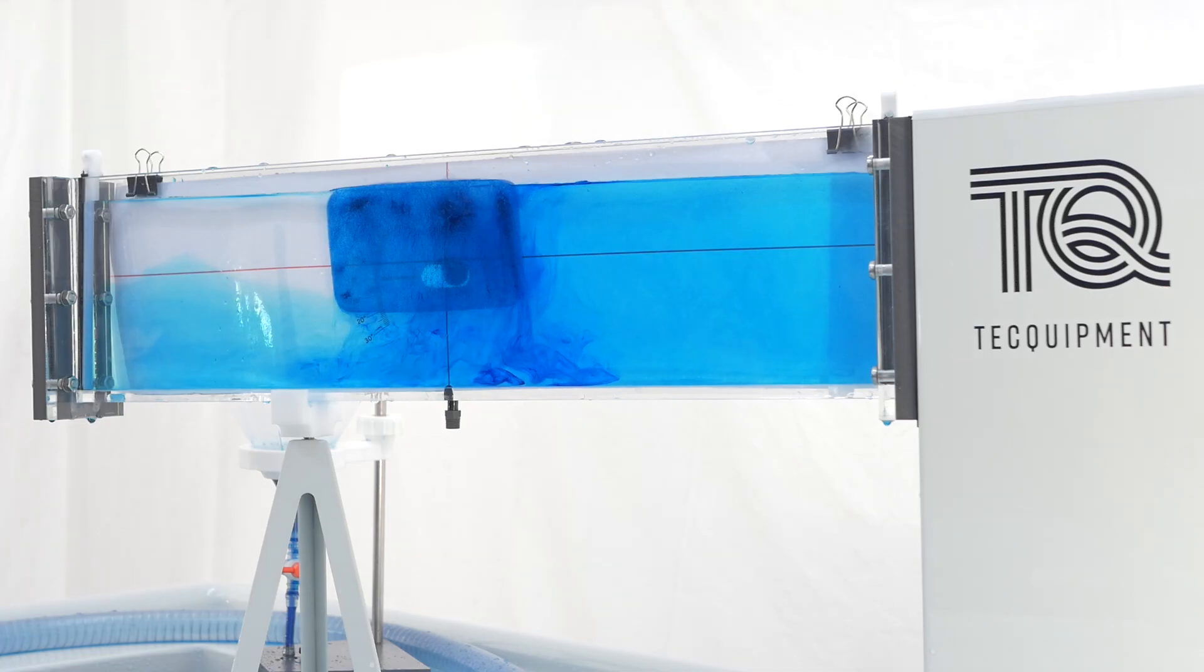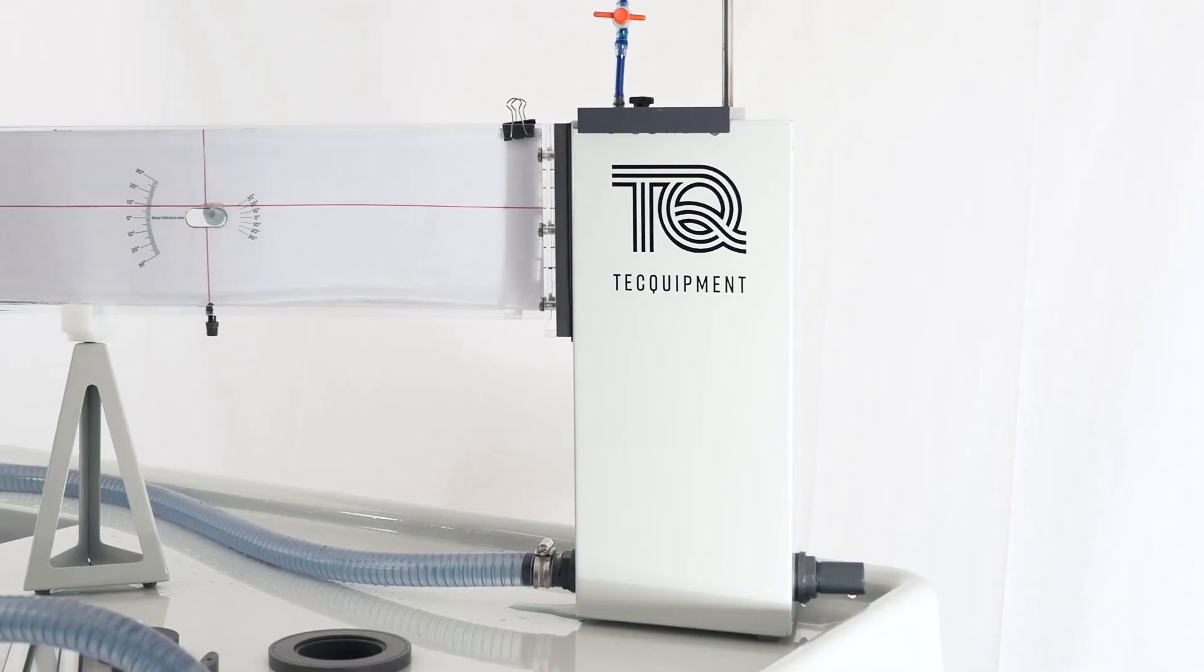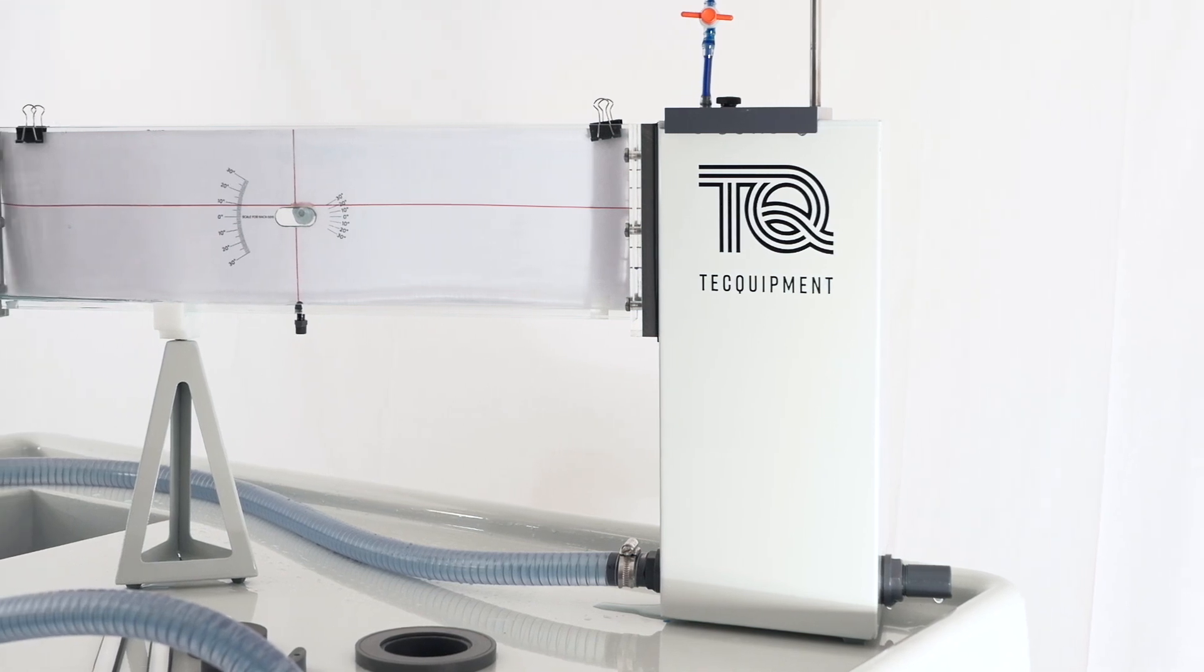As you can see here, the experiment consists of a flow channel that is 15 millimeters wide, made out of transparent acrylic. At this end is a stainless steel tank designed to settle the water with the aim of reducing turbulence.